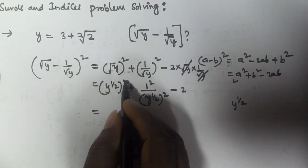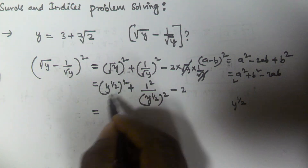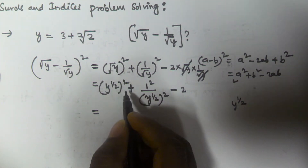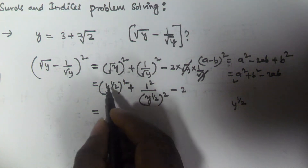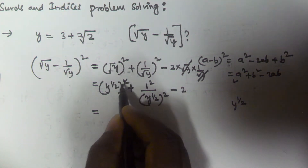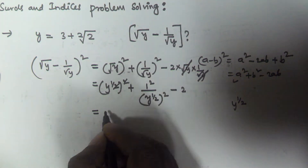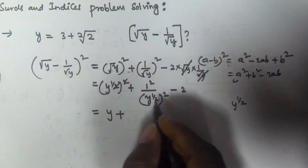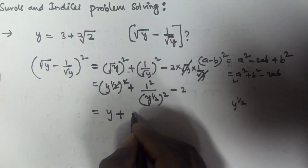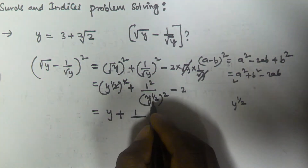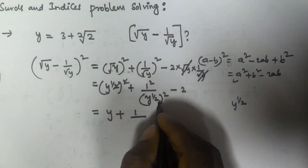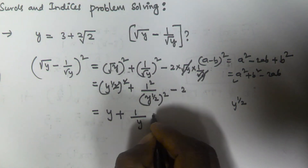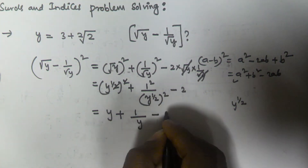Applying the index law — a to the power m to the power n equals a to the power m times n — we get y to the power 1 by 2 times 2, and the 2s cancel, leaving y. So the expansion gives us y plus 1 by y minus 2.